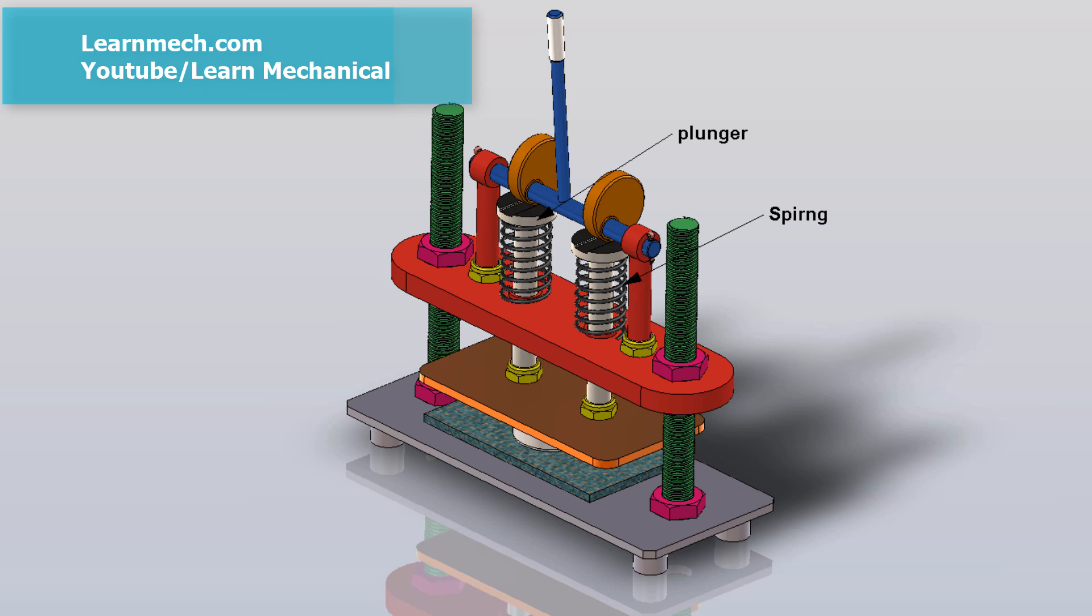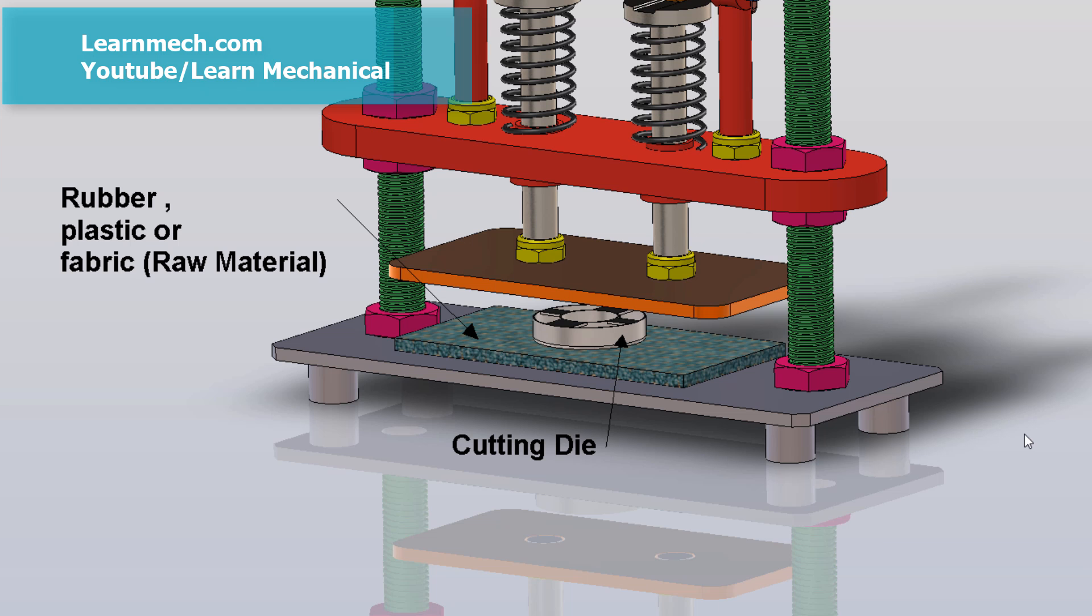The die is an important element here. The die shape should be the same as the workpiece profile or shape. For a variety of profiles, we need different dies according to the profile to be made.